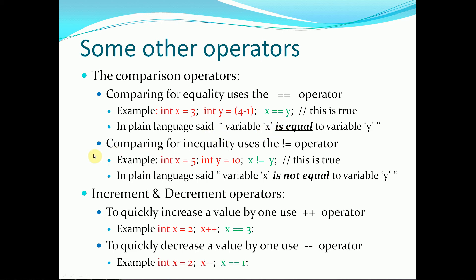Now, comparing for inequality, we can also use the not equal operator denoted by the exclamation point. So for example, if we have an integer x, which is set to 5, and an integer y, which is set to 10, we can say that x does not equal y. And this again is true, because 5 does not equal 10. In plain English, we can say variable x is not equal to variable y.